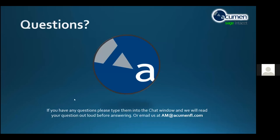Let's open it up to questions — it's in read-only mode, so please use the Q&A or chat function. The first question: can dimension relationships be used on user-defined dimensions? Yes, they can. Dimension relationships can be set up for standard dimensions — customer, vendor, item, department, class, project — but if you've purchased a user-defined dimension because you need an additional one, you absolutely can do the same thing there. The answer is yes.